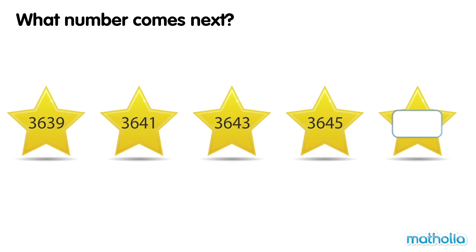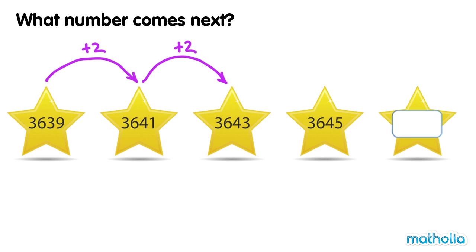What number comes next? 3639 plus 2 equals 3641. 3641 plus 2 equals 3643. In each step the numbers go up by 2. 3645 plus 2 equals 3647. The next number is 3647.